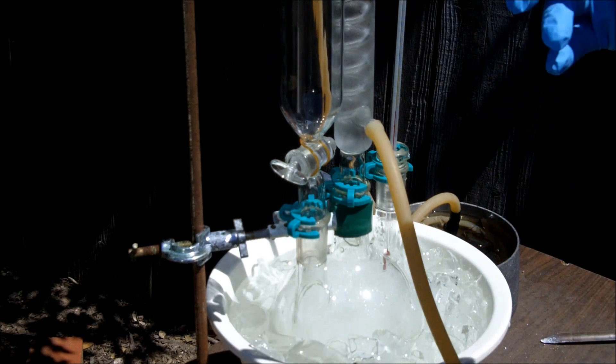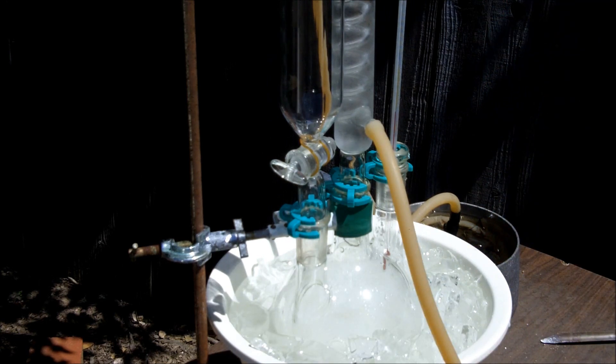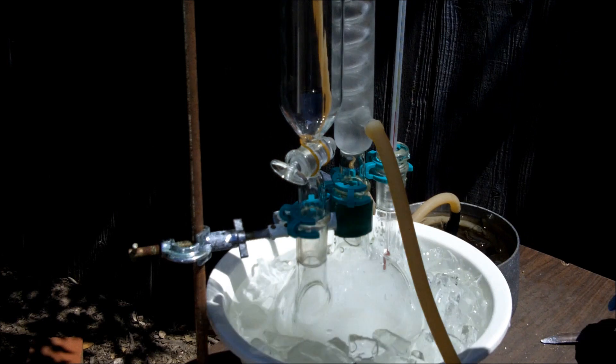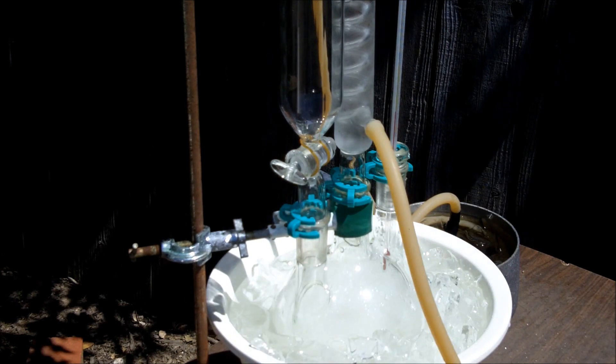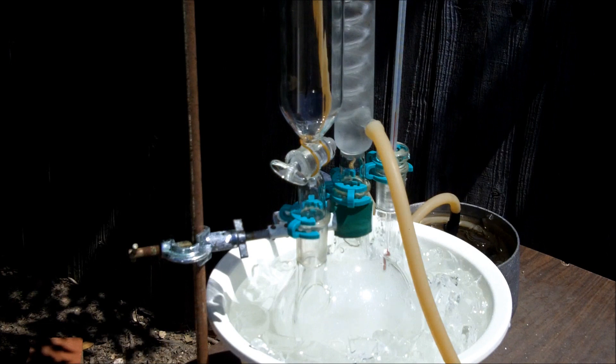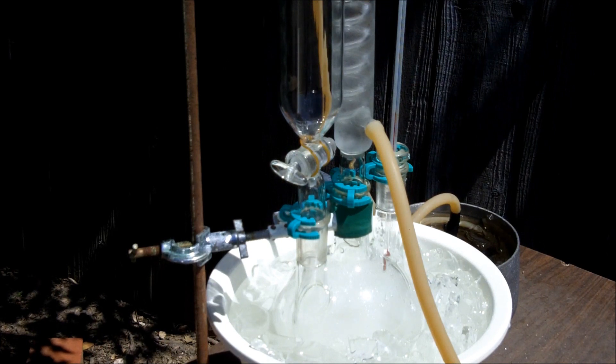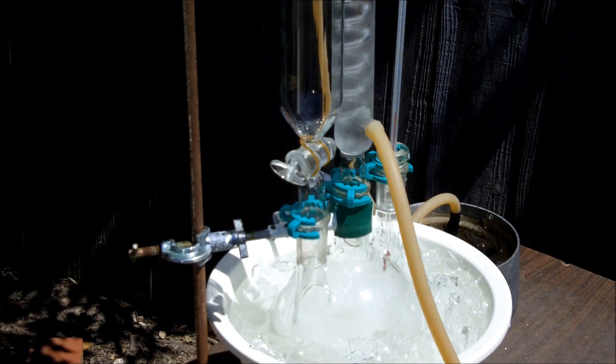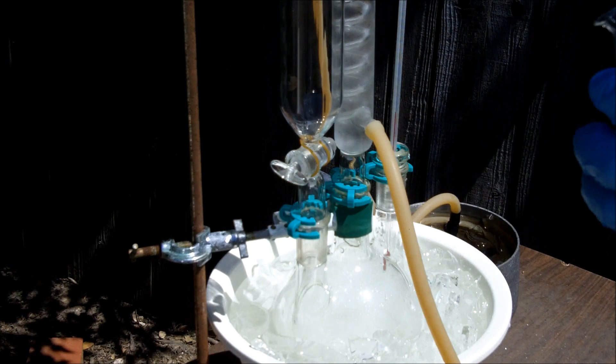I'll pour a few milliliters into that addition funnel. I don't want to get too much in there at one time just in case it were to open without me looking. I'll set a pretty slow drip rate and do my best to watch the temperature as it goes. You'll know this reaction is done because you'll be adding acetone and the temperature won't be increasing.